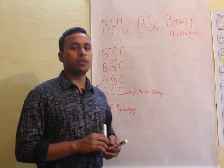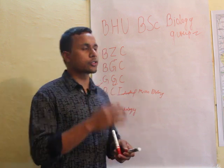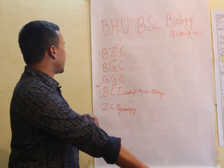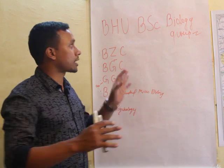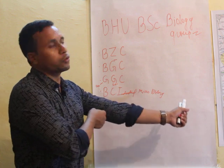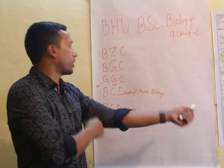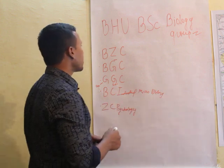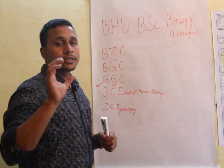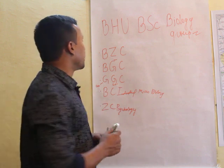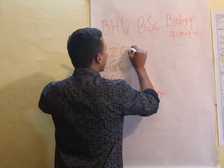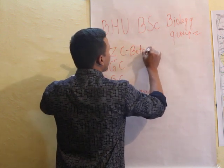Just listen carefully, let us proceed. Overall there are five combinations in this category — BSC Biology Group at BHU, Banaras Hindu University. The first combination is called BZC, which stands for Botany, Zoology, and Chemistry.